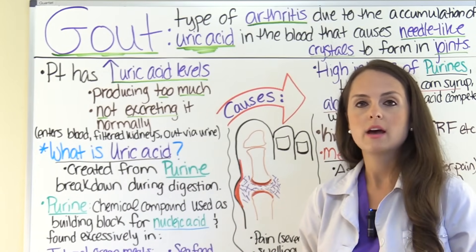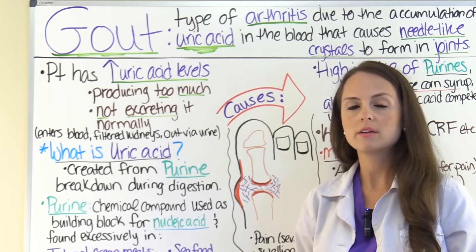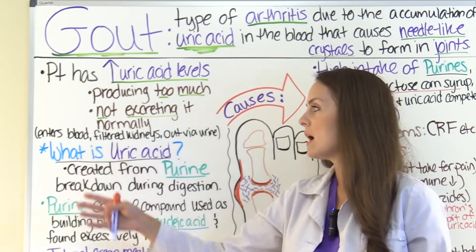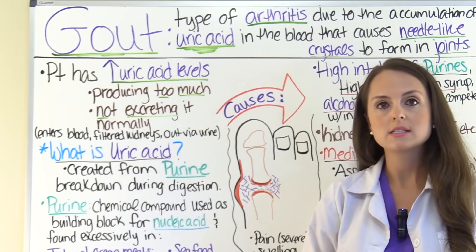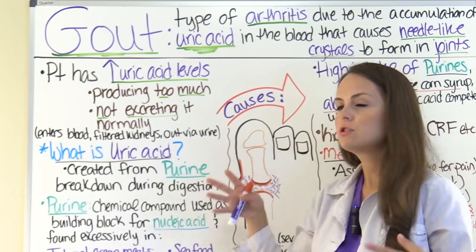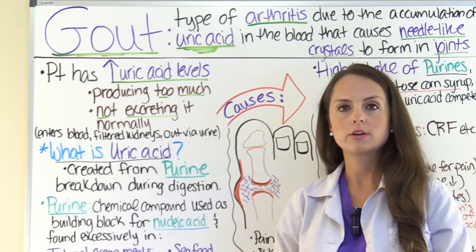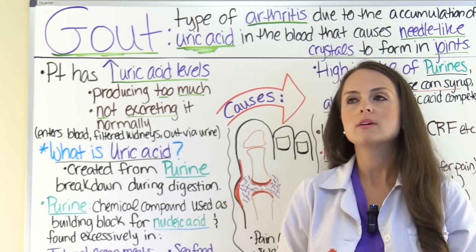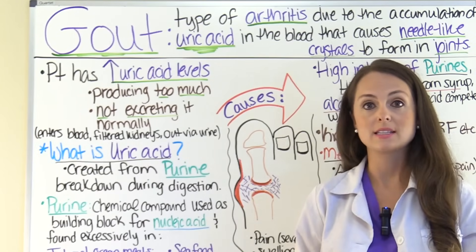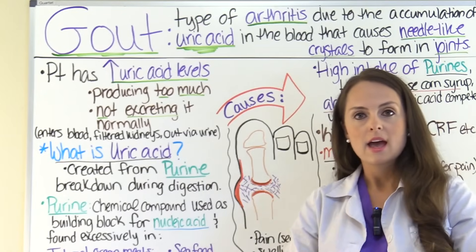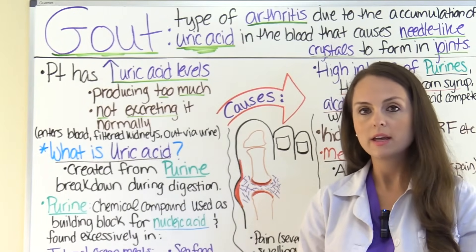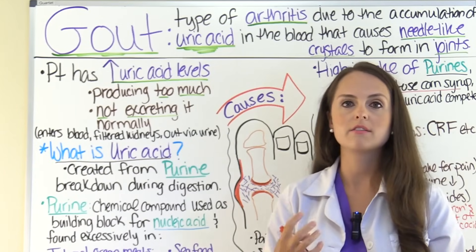We learned in our renal videos that uric acid is one of those waste products. What happens is that it enters the blood, it's filtered through the kidneys — specifically those nephrons — and then it's going to be excreted into your urine. So it's really important you don't have too much of this substance lingering in the blood, because if you do, it can form these needle-like crystals that accumulate in those joints and cause a lot of pain.